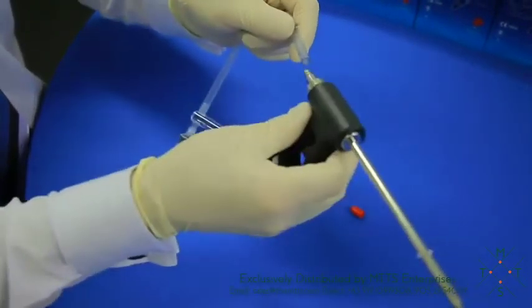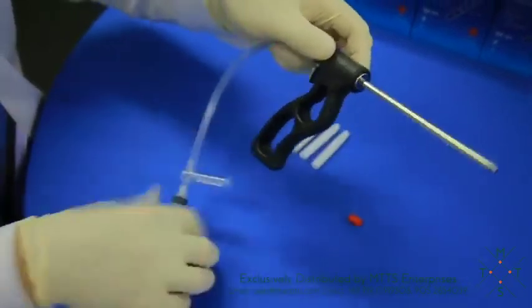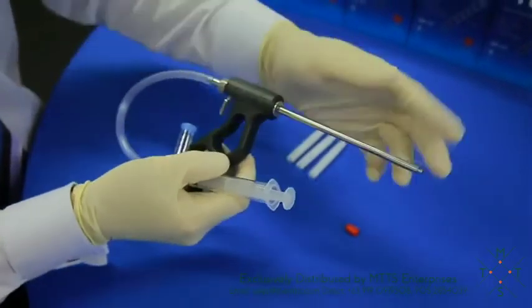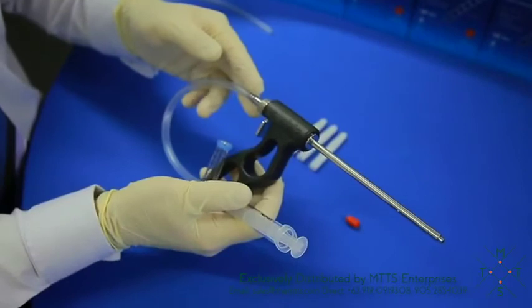We will then place the tubing onto the handpiece. Now it's very important at this stage that we don't load a capsule before we place the tubing onto the handpiece.